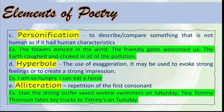Next is personification — it is to describe or compare something that is not human as if it had human characteristics. Examples: 'The flowers danced in the wind.' 'The friendly gates welcomed us.' 'The earth coughed and choked in all of the pollution.' Next is hyperbole — the use of exaggeration to evoke strong feelings or create a strong impression. Example: 'I am so hungry, I can eat a horse.' Sanaol.